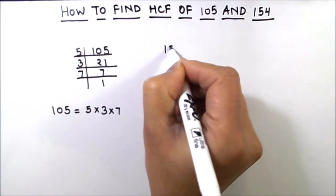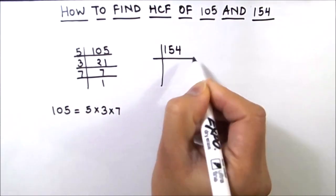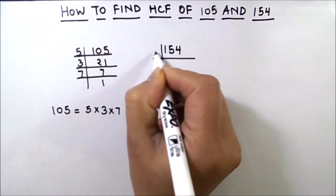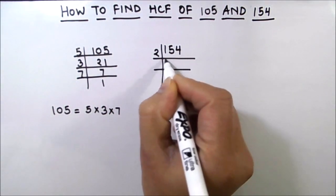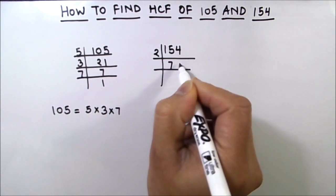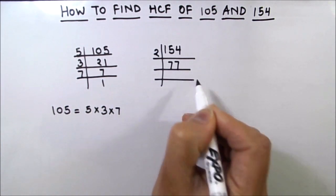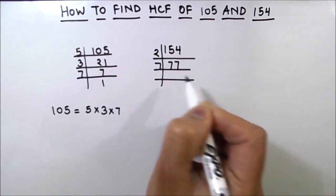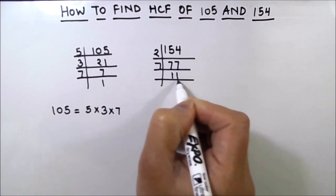Now let's divide 154 and find the factors of 154. As it is an even number, it is easily divisible by 2. So 2 times 7 is 14, 1 is carried over, so this becomes 14. Now 77 is easily divisible by 7. 7 times 1 and 7 times 1.